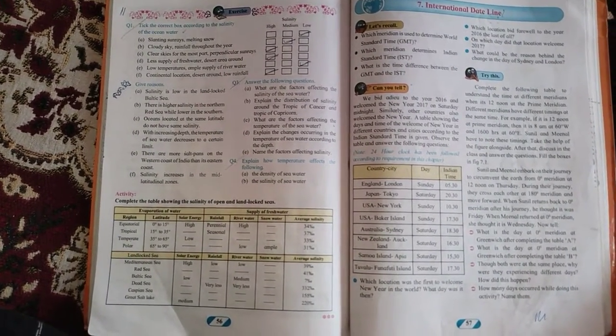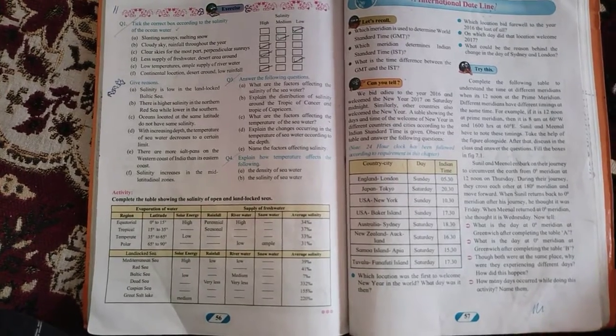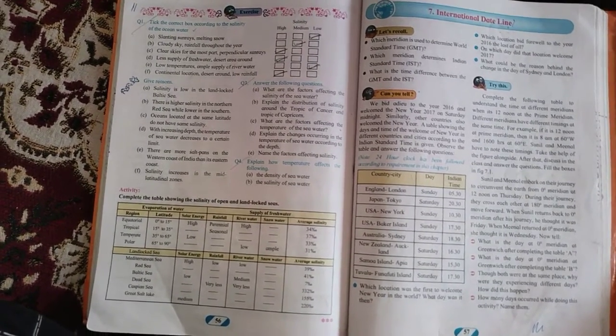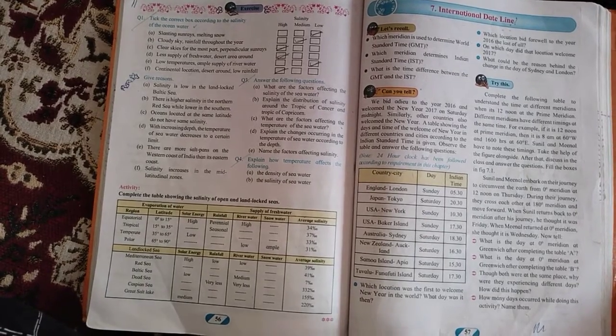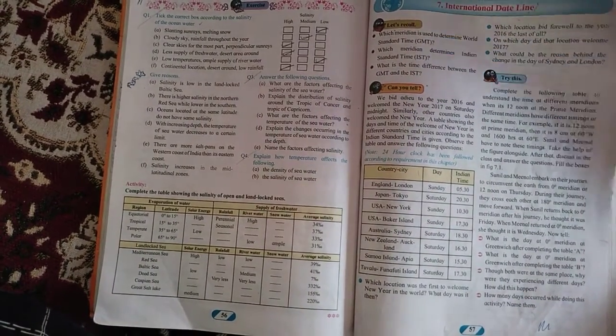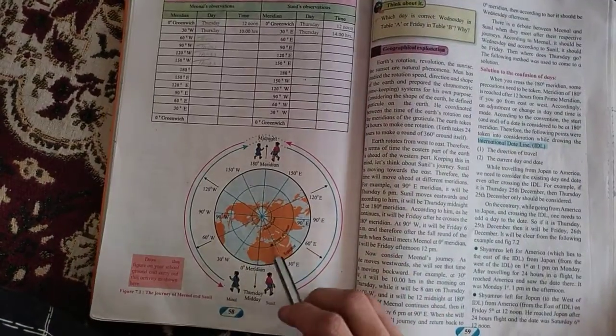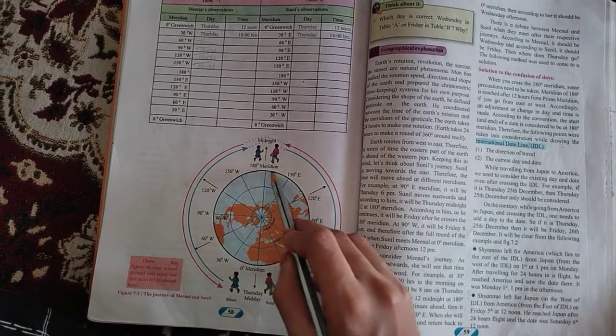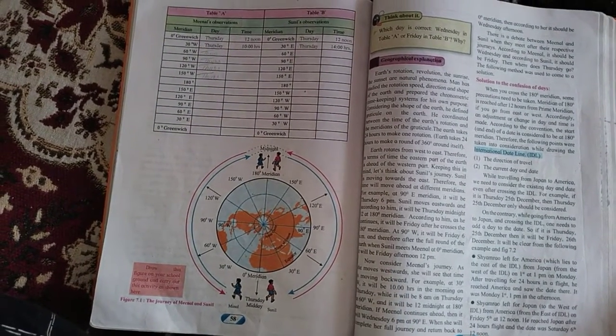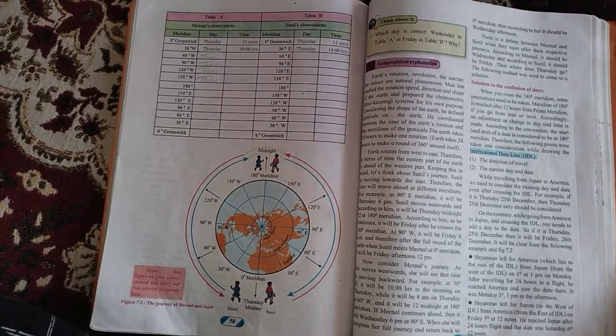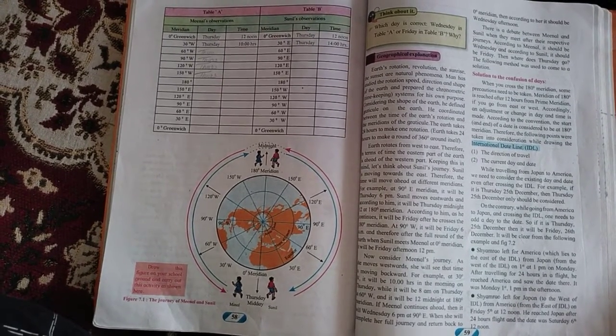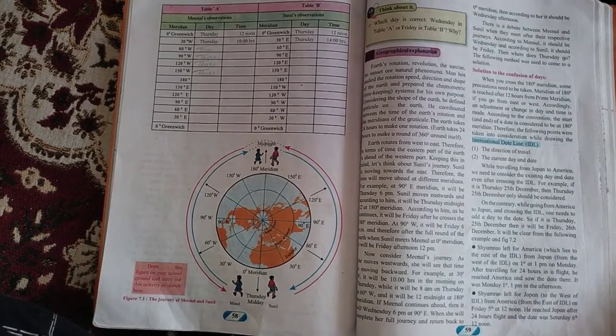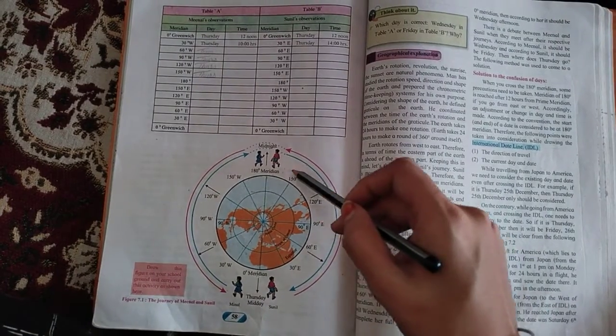International dateline is an imaginary line drawn to the opposite of Greenwich Prime Meridian, that is with reference to 180 degree meridian. The day and the date is always ahead by one day in the west of International Dateline, then the day and the date running in the east of International Dateline.